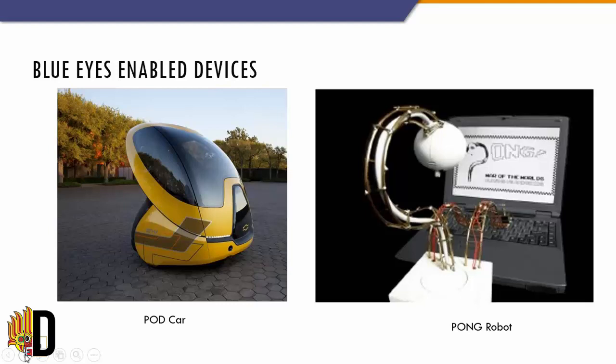The first Blue Eyes enabled mass production device is a car manufactured by Toyota. It can keep the driver alert and active, slow down the vehicle if the driver is running too fast, and most interestingly, it will provide music if the driver feels bored.